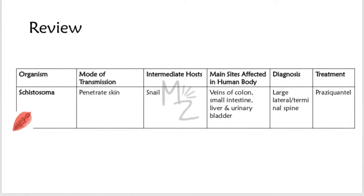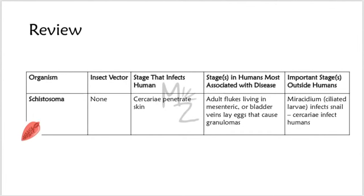Quick review: the organism is Schistosoma; its mode of transmission is through skin penetration; intermediate hosts are different species of snails for each species; definitive hosts are human beings; main sites affected are veins of the colon, small intestine, liver, and urinary bladder. On diagnosis, large lateral or terminal spines of the different species are seen. Treatment of choice is praziquantel. There is no insect vector. The stage that infects humans is cercariae, which penetrate the skin. Adult flukes living in mesenteric or bladder veins lay eggs that cause granulomas. Important stages outside humans are miracidia (ciliated larvae that infect the snail) and cercariae (that infect human beings).